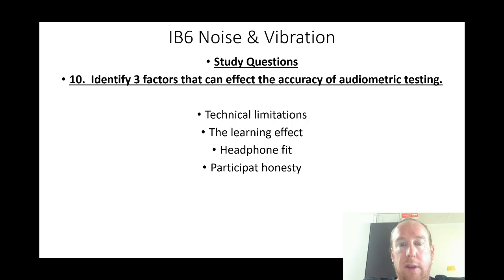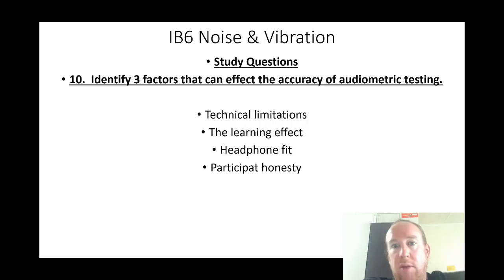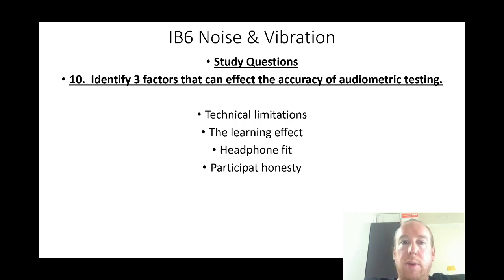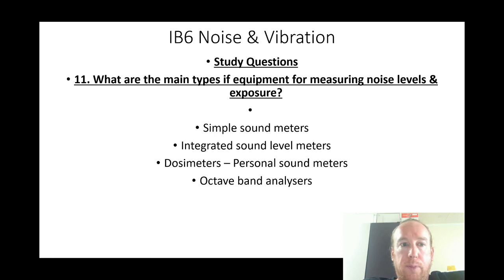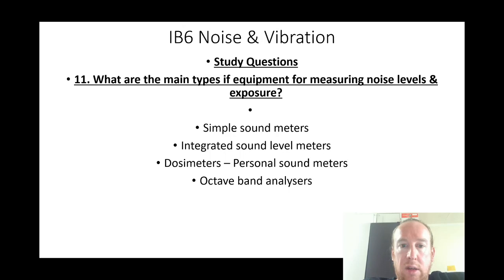Identify three factors that can affect the accuracy of audiometric testing: technical limitations, the learning effect of the participant, headphone fit, and participant honesty. What are the main types of equipment used for measuring noise levels and exposure? Simple noise meters, integrated sound level meters, dosimeters, personal sound meters, and octave band analysers.